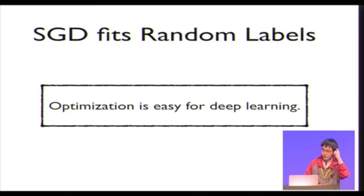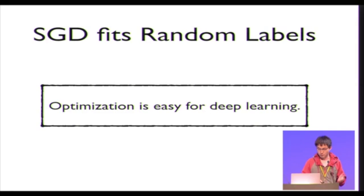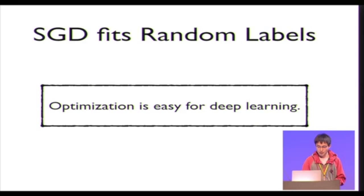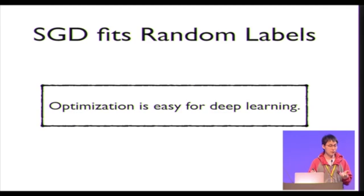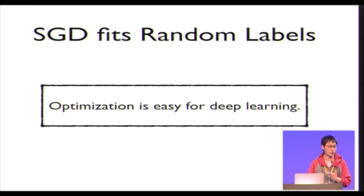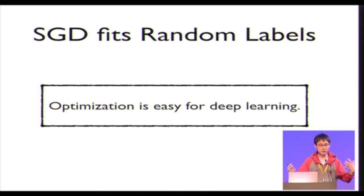As a side observation from our experiments: it seems like optimization in the regime of deep learning is kind of easy. The sources of difficulty of optimization seem to be different from the sources of difficulty of generalization, so learning and optimization could be difficult in different ways and do not necessarily correlate with each other.